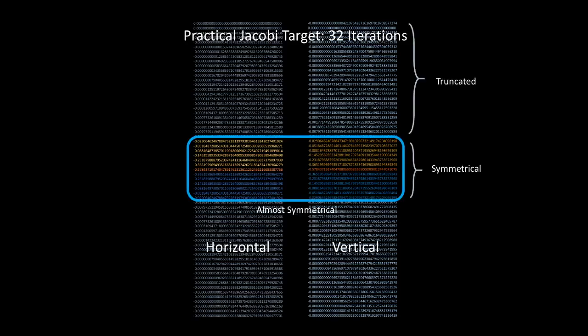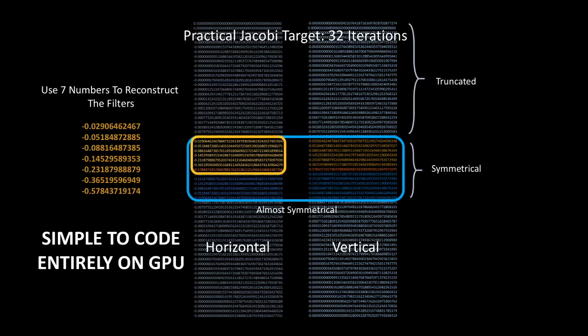The interesting thing is, the remaining parts are very much symmetrical, so all we need to do is using these seven numbers in our shader code for the Poisson pressure.